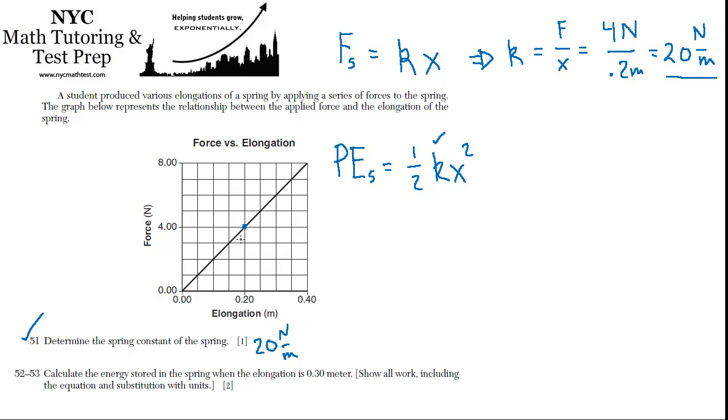And we now know k because we just went and found it. And that doesn't change because it is the spring constant for this spring. And they're telling us that the elongation is 0.3 meters.